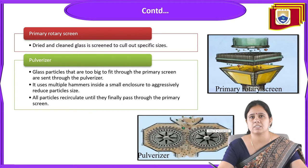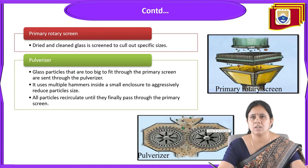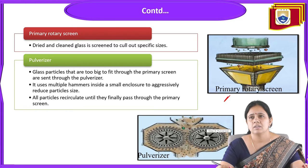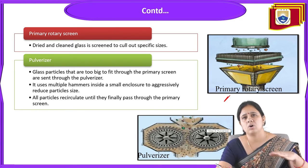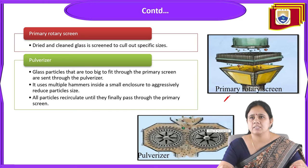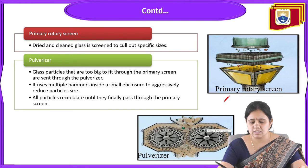Step five is the primary rotatory screen. The dried and clean glass is screened to sort out specific sizes. Particles of the correct size pass through, while oversized particles are sent to the next step.